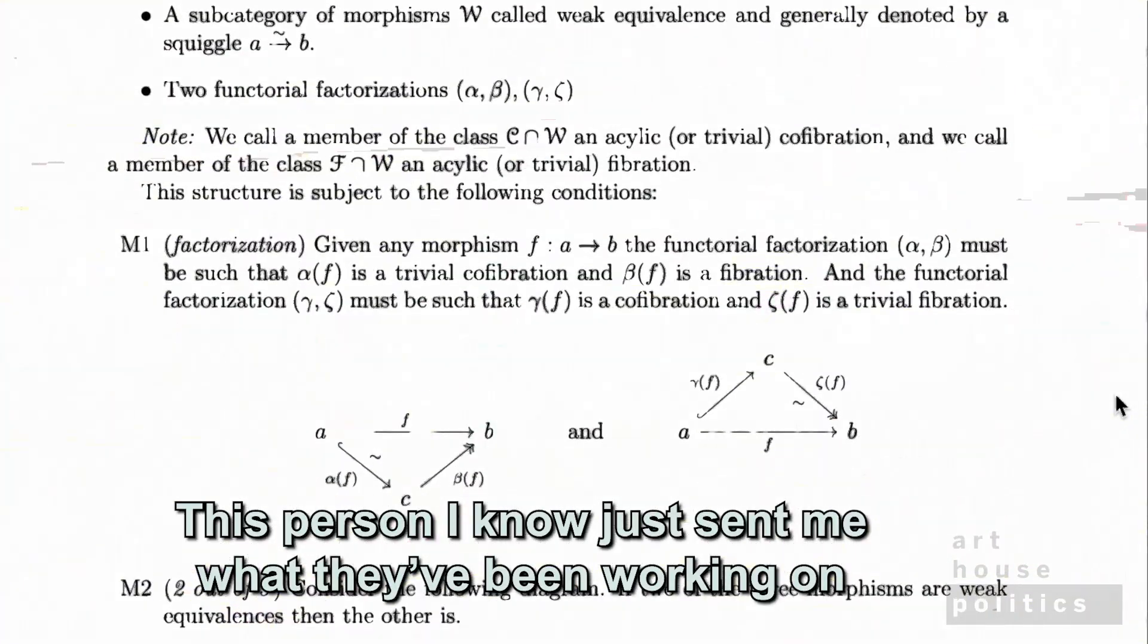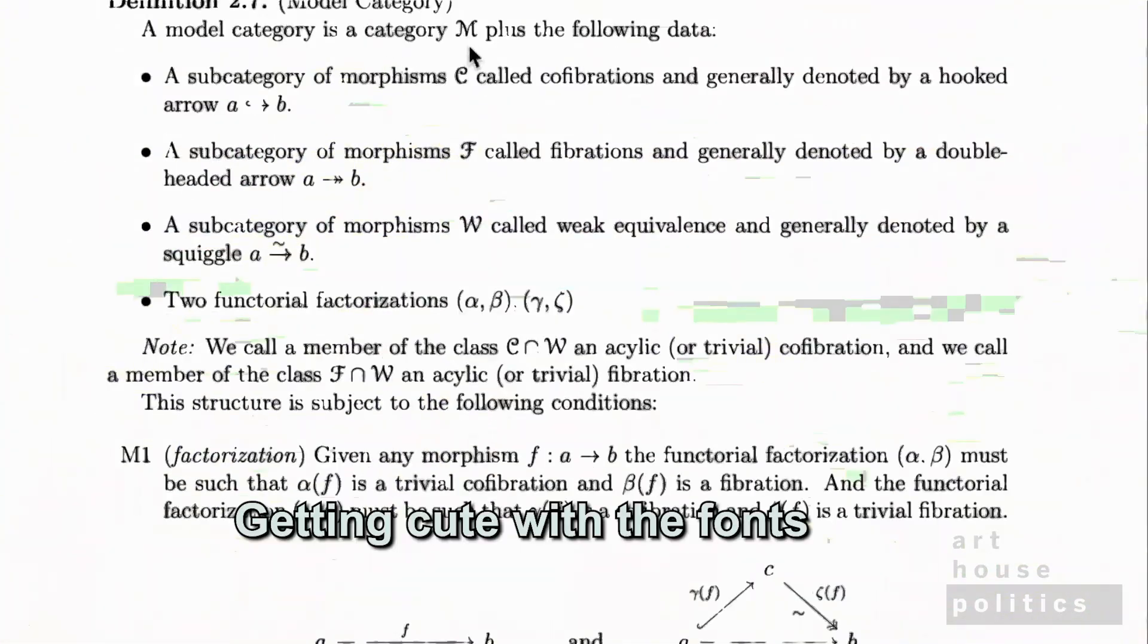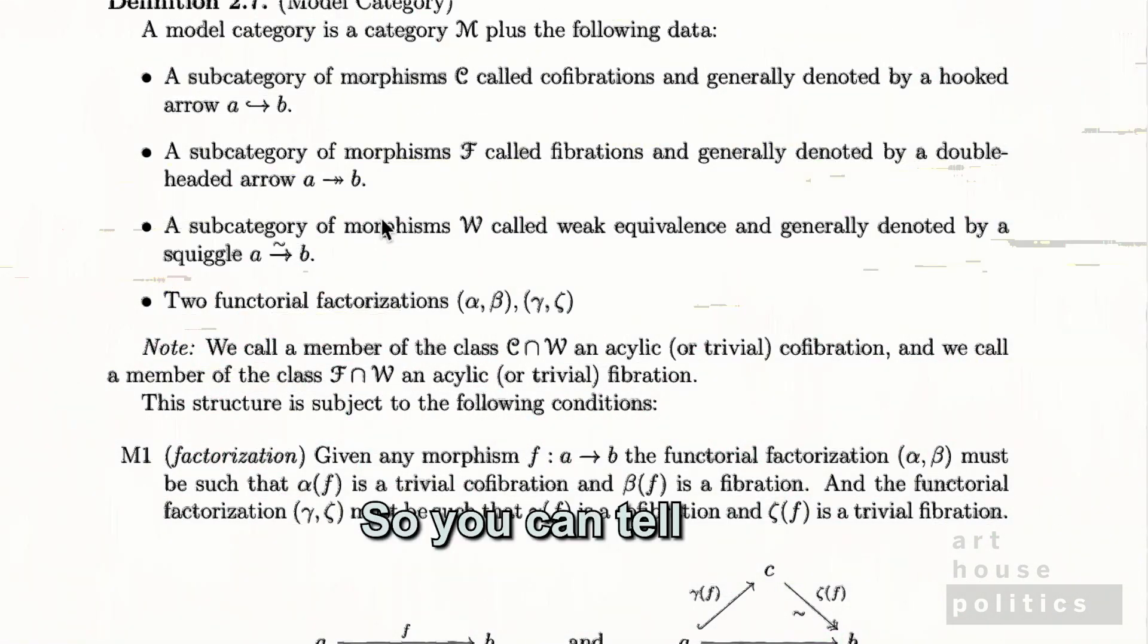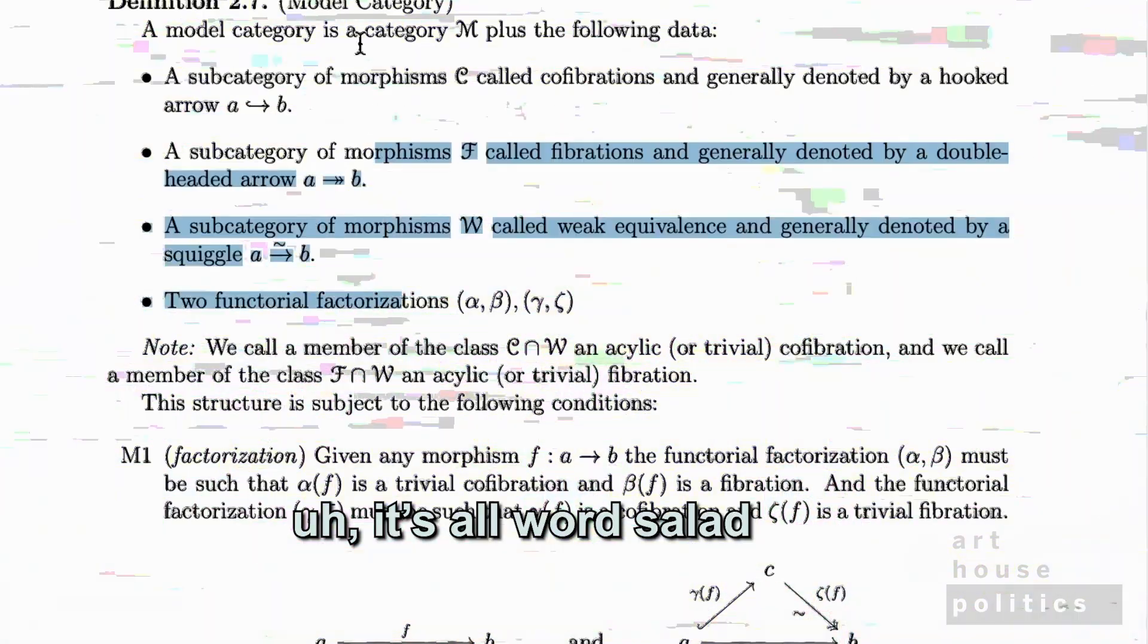This person I know just sent me what they've been working on the last couple of years, getting cute with the fonts, subcategory morphism C, called co-vibrations. So you can tell, it's all word salad.